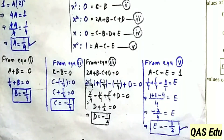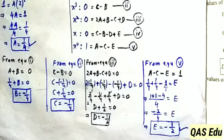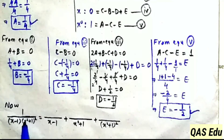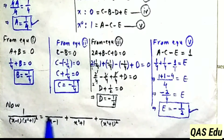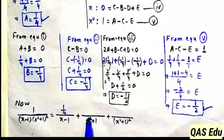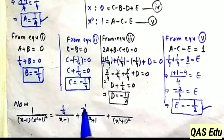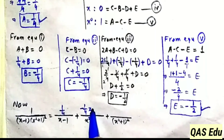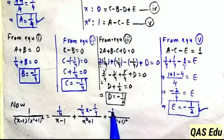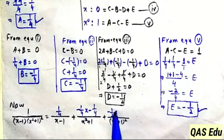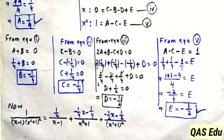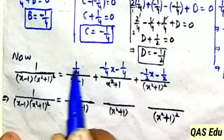Now all values A, B, C, D are found. Putting them in equation number 1, the fraction 1 over x minus 1 into x square plus 1 whole square is resolved into partial fractions. For the linear factor x minus 1, the numerator constant A equals 1 over 4. For the first quadratic factor, Bx plus C: B equals minus 1 over 4, C equals minus 1 over 4, giving minus x minus 1 over 4 divided by 4.